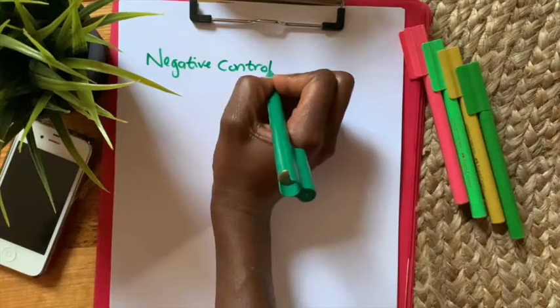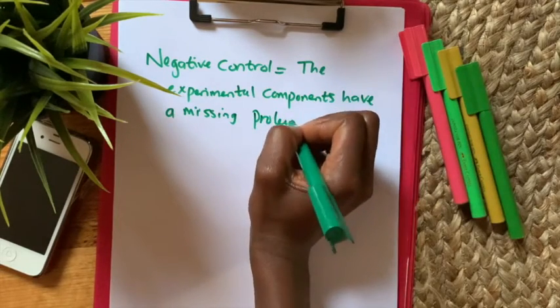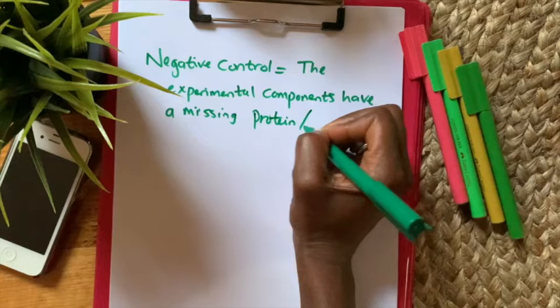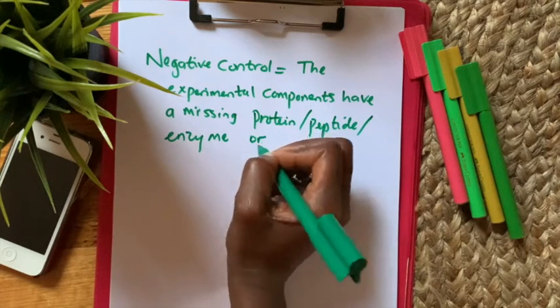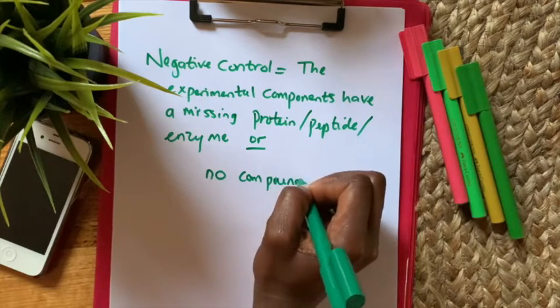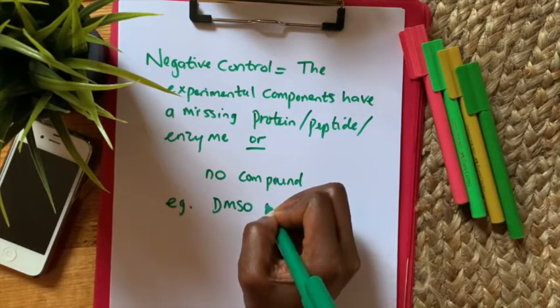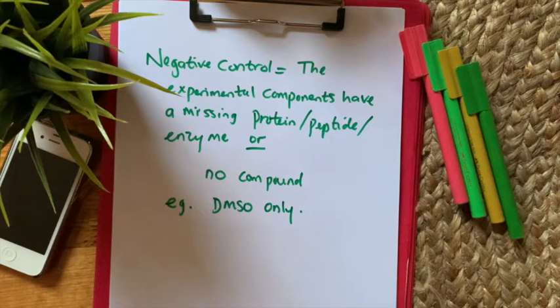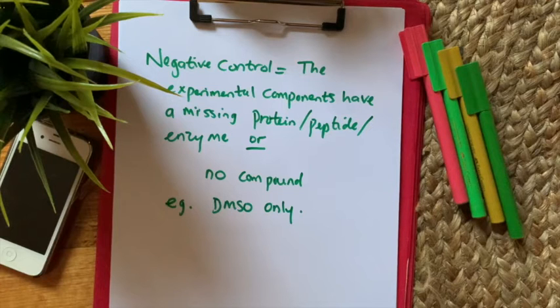Your negative control is where you have a protein, peptide, or enzyme missing, or simply where you have no compound — just DMSO in the system. It reports to you when nothing is happening, and you need it to compare against your test compounds. If you think nothing is happening with a test compound, you compare it to your negative control — if it matches, that confirms nothing is happening.